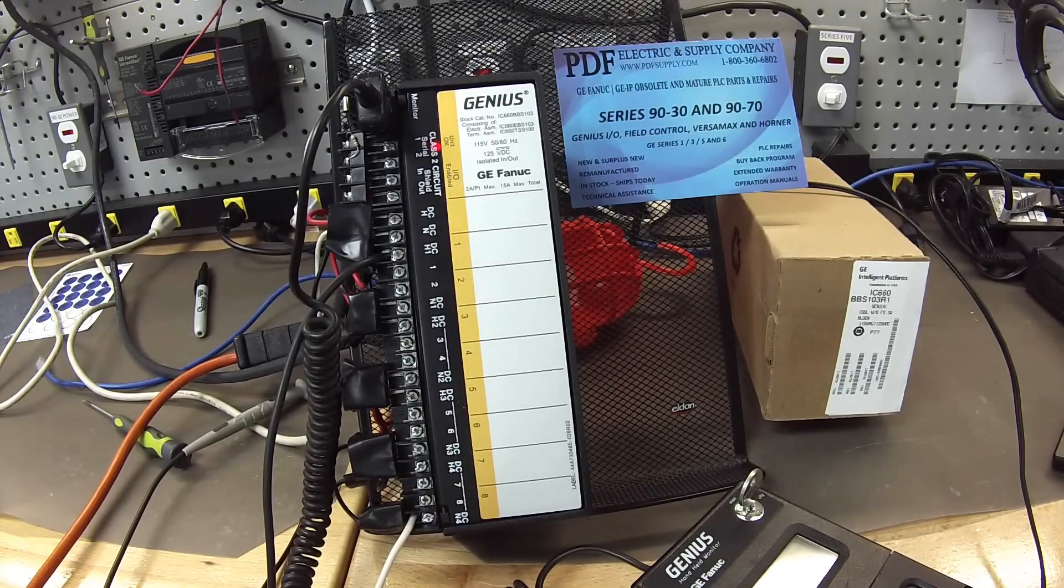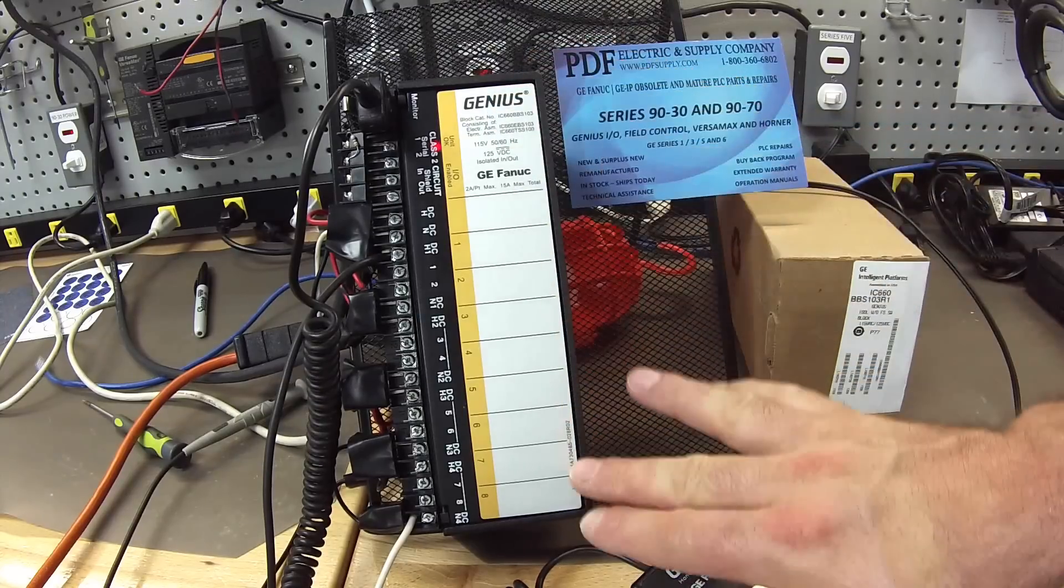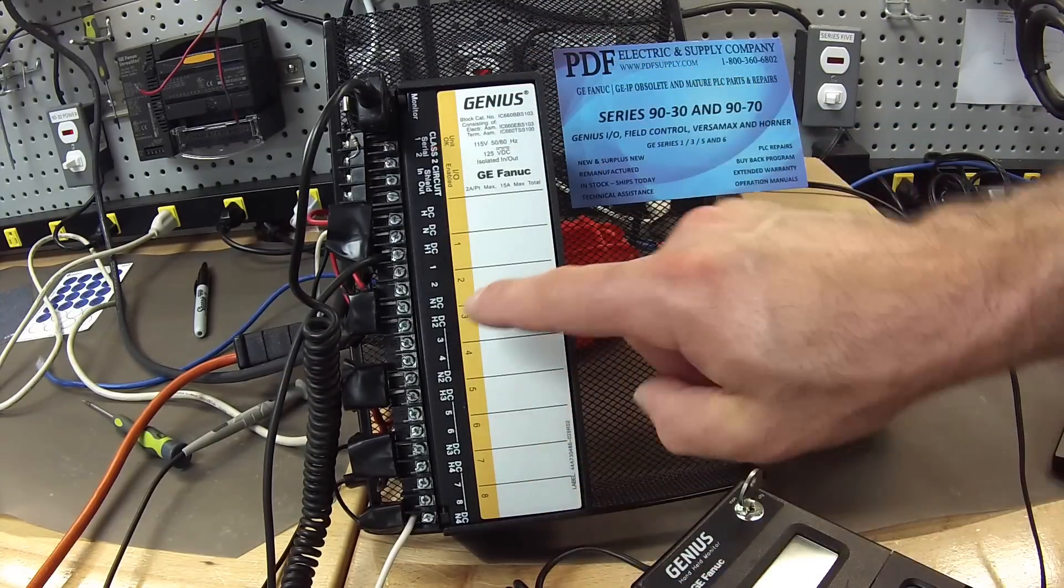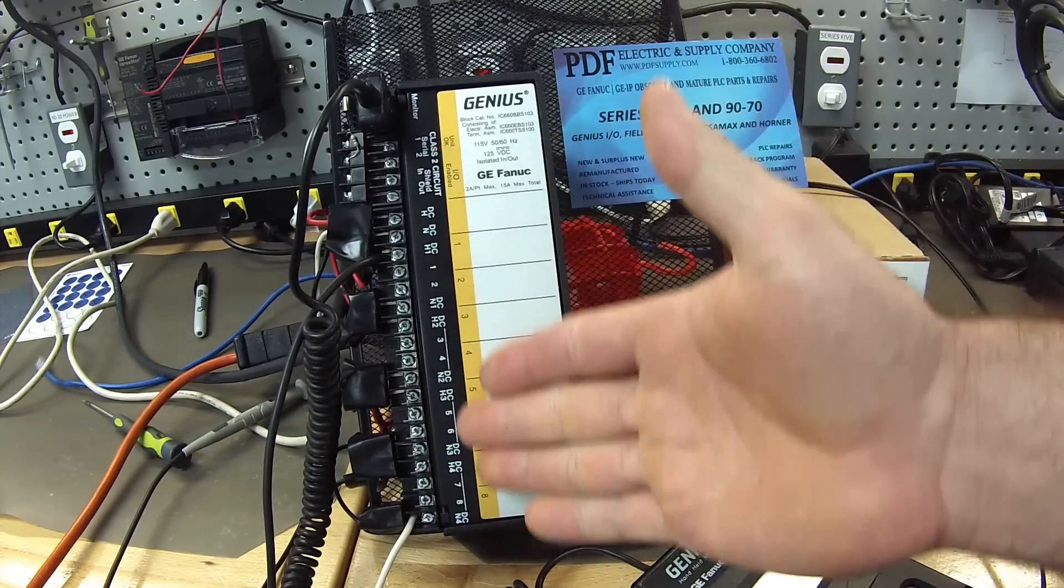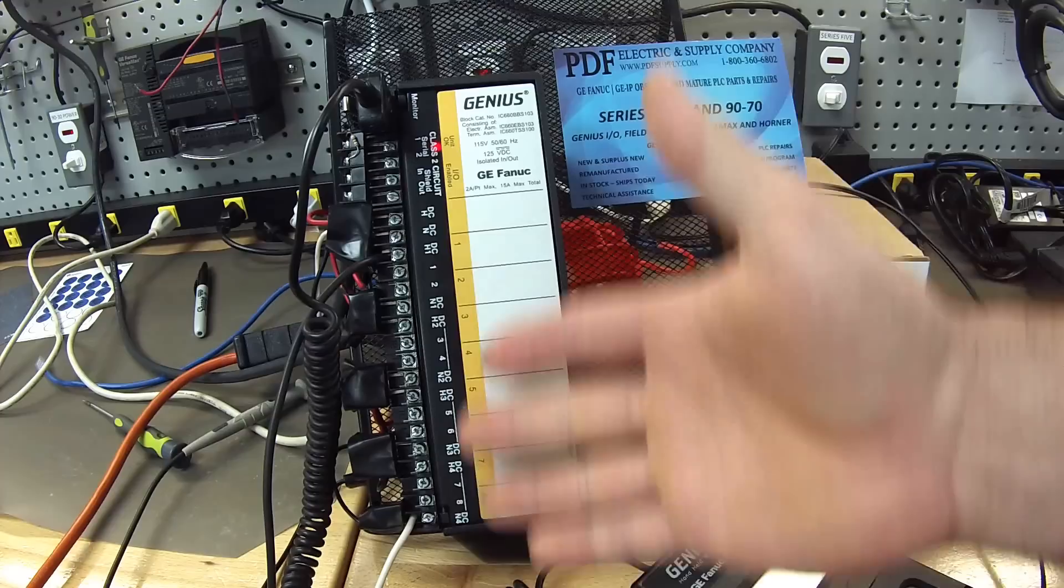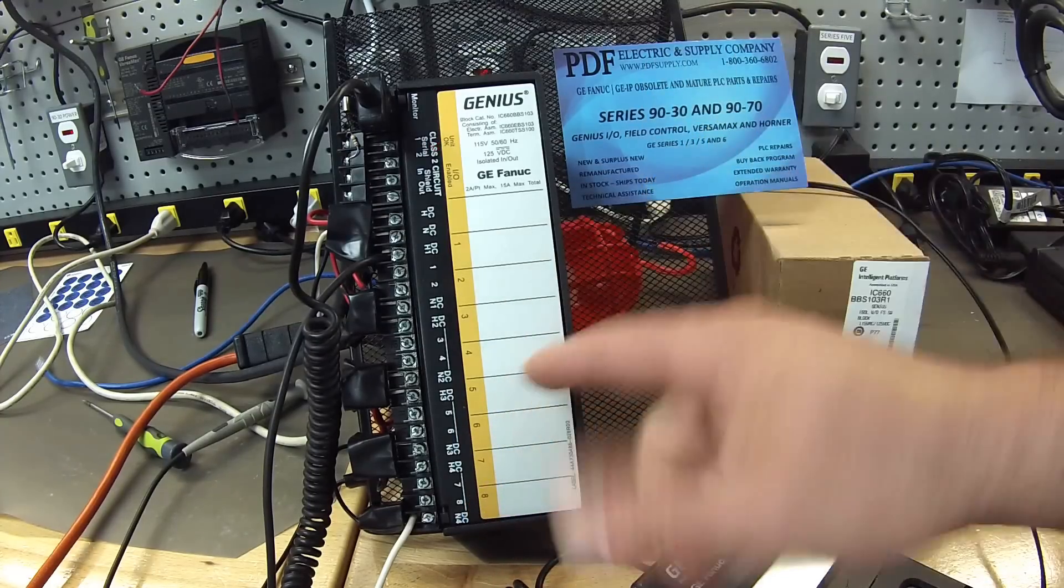Now, as far as troubleshooting, the common problems that we see with this would be an output that doesn't truly stay off. We would touch it, it's indicated that it's off, but it's really on. That's a circuitry problem.